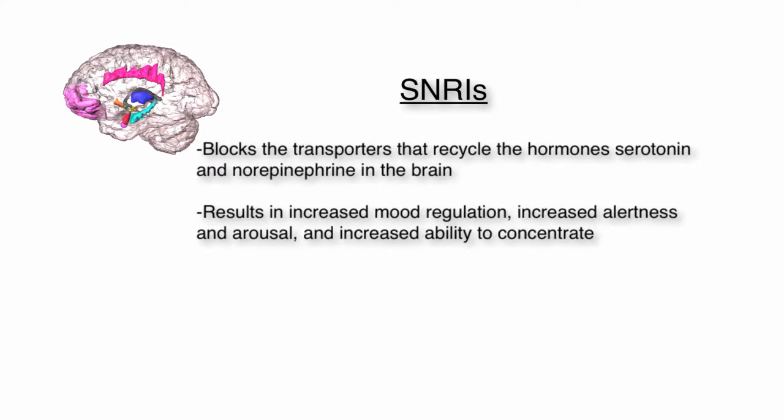SNRIs block the transporters that recycle the hormones serotonin and norepinephrine in the brain. This allows serotonin and norepinephrine to provide brain signals for an extended period of time. Just like SSRIs, SNRIs help to restore balance in the mesolimbic system. This results in increased mood regulation, increased alertness and arousal, and increased ability to concentrate.